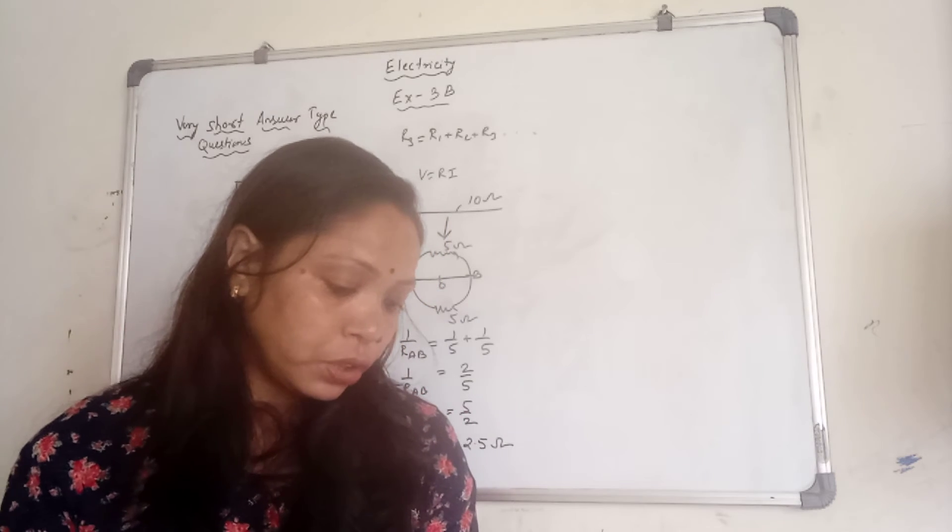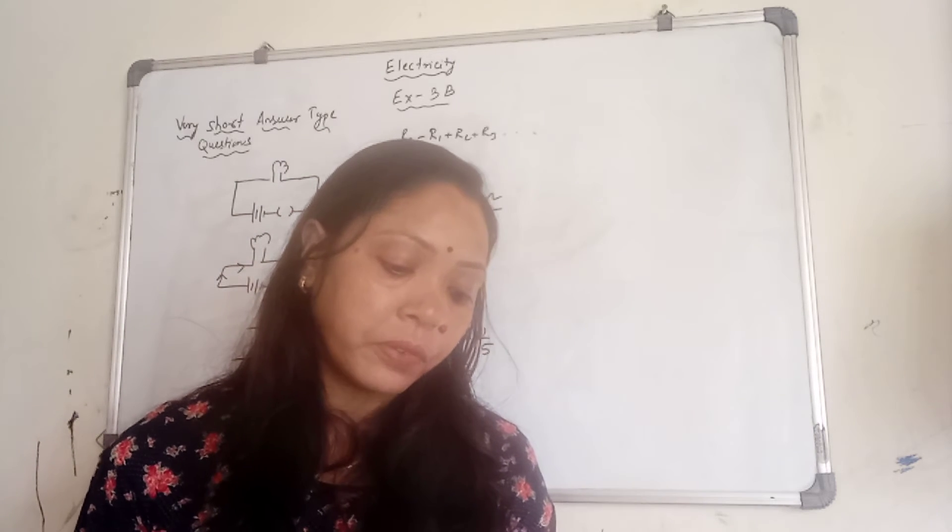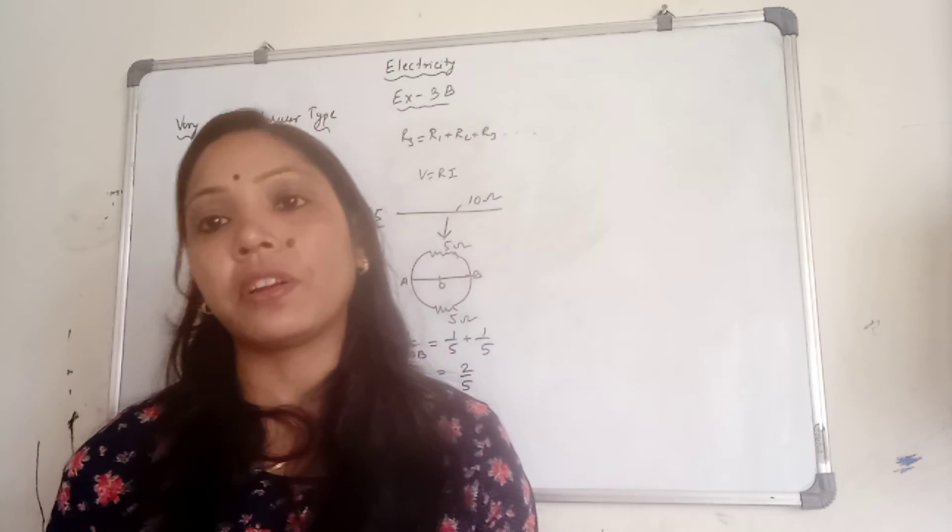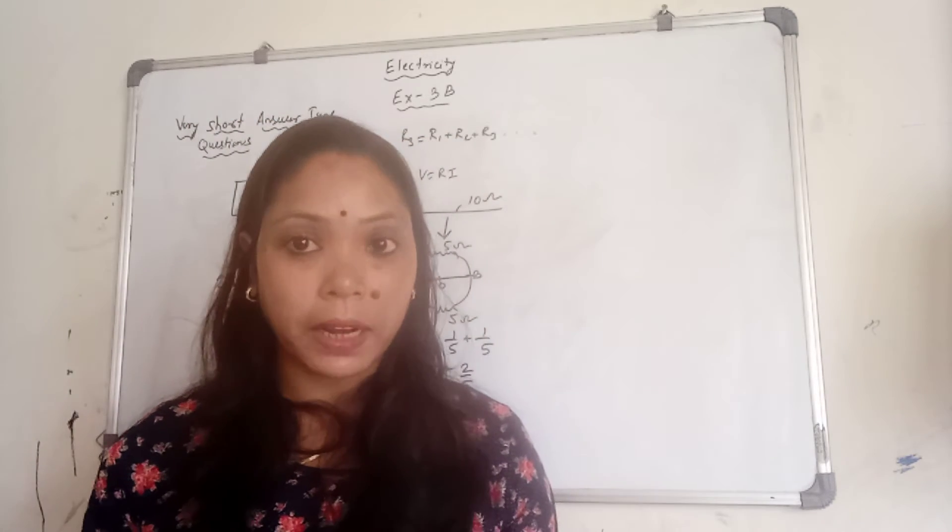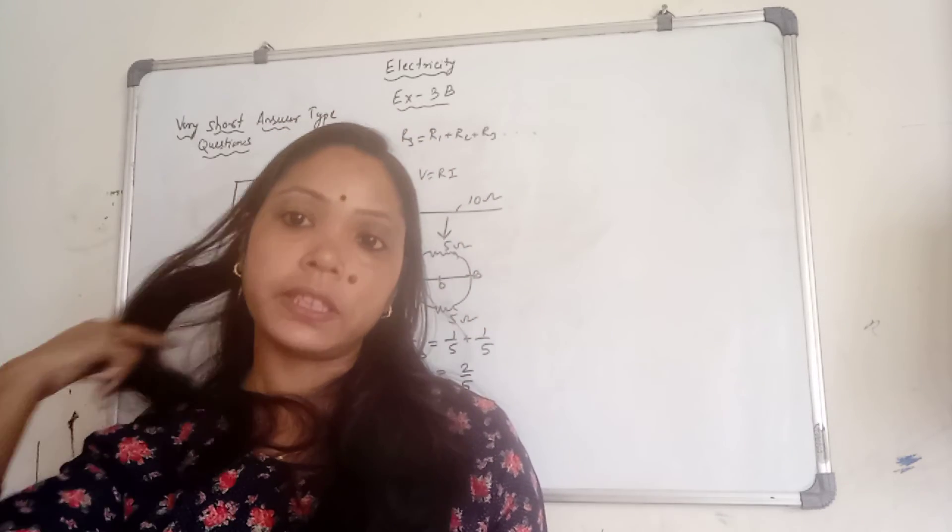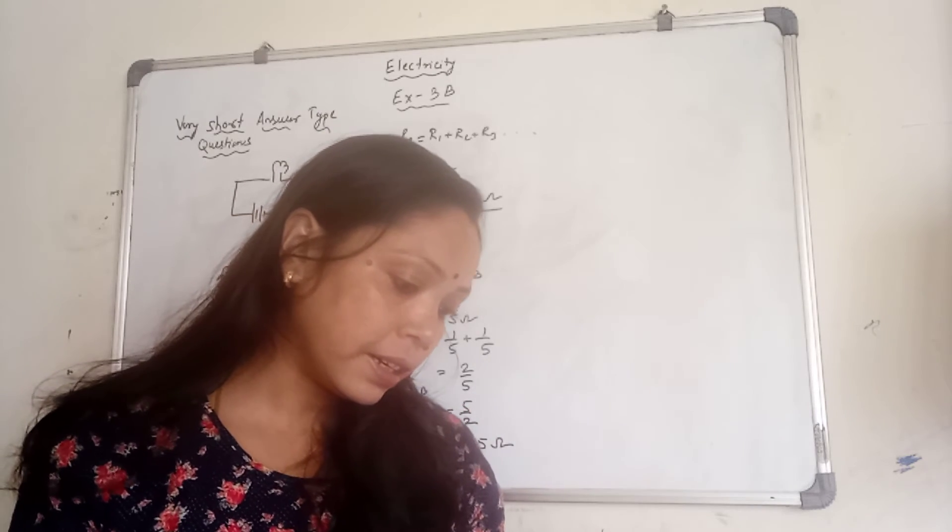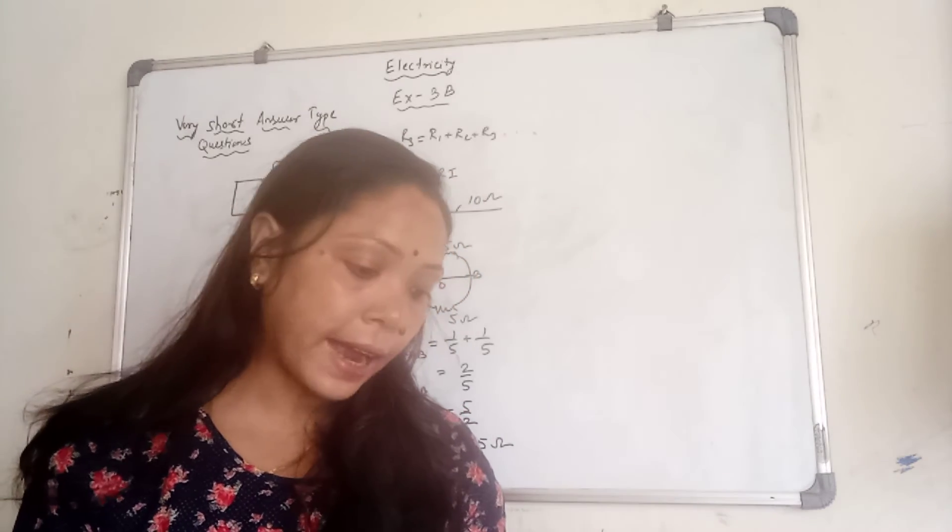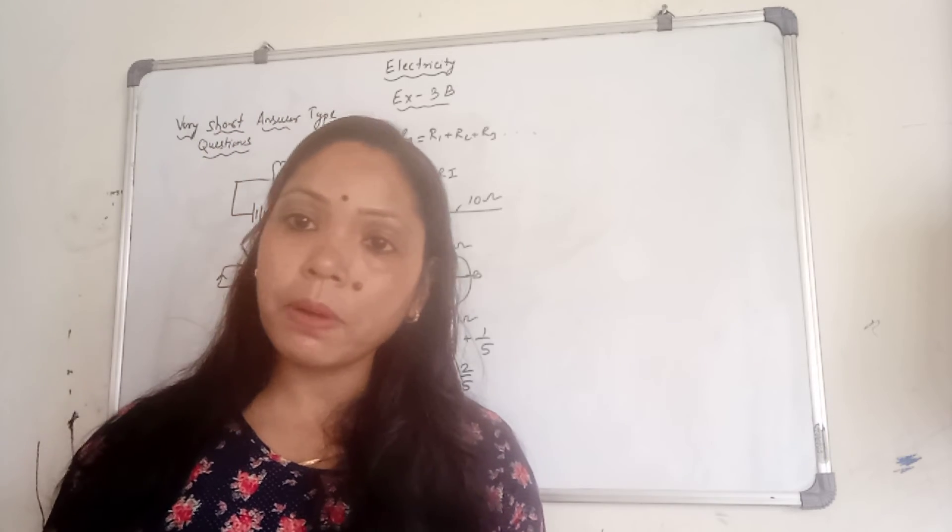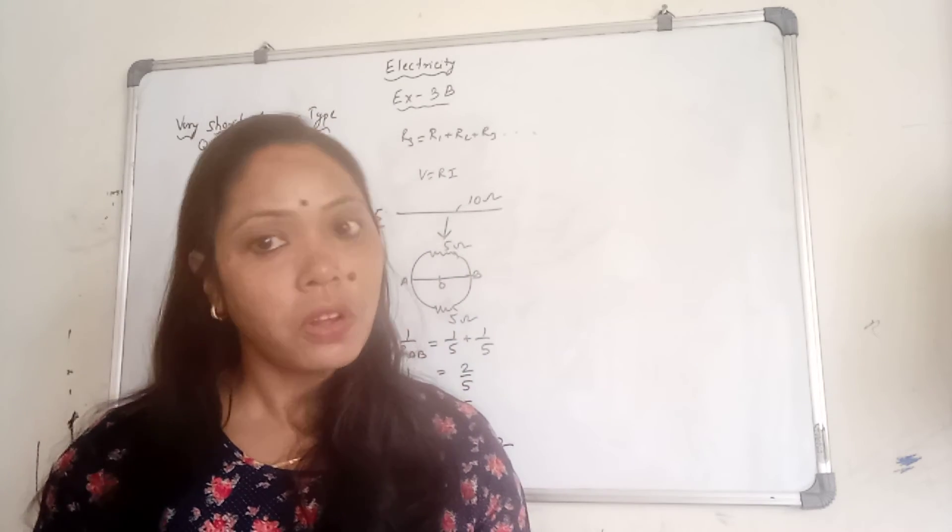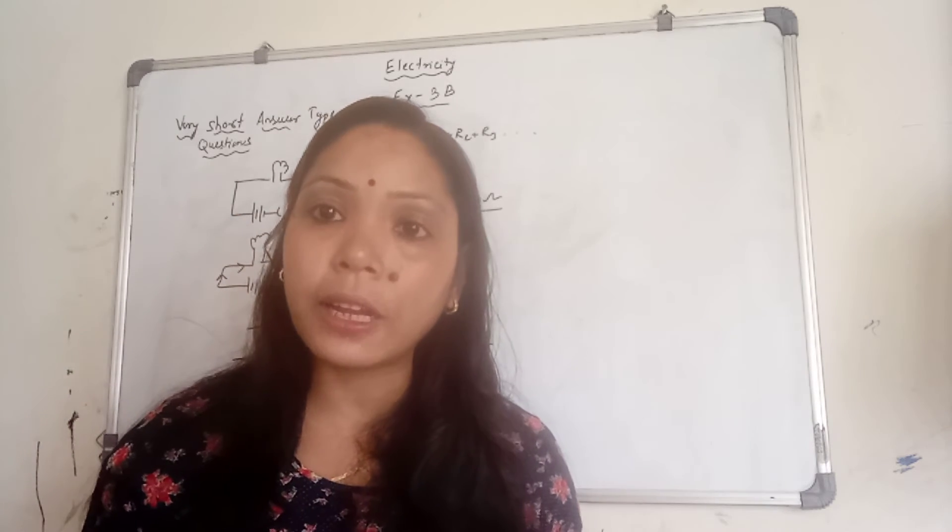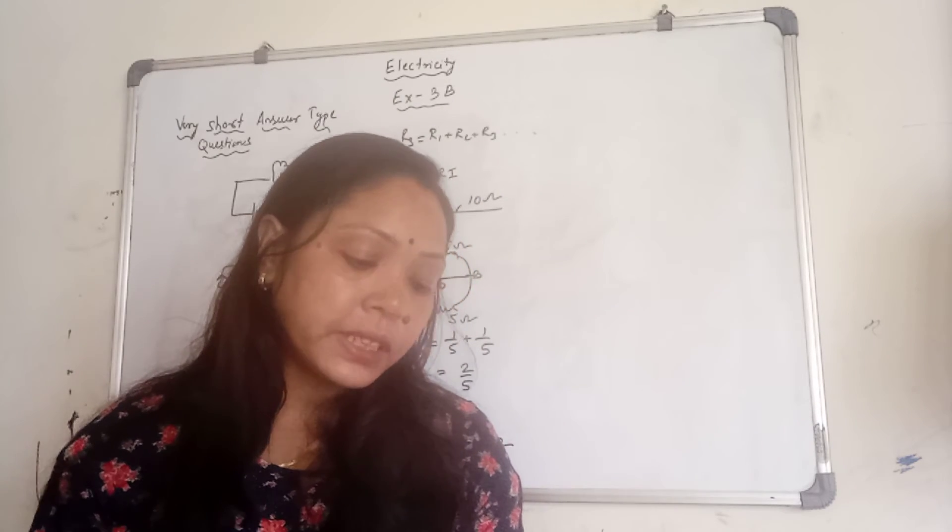Question number 6: should the heating element of an electric iron be made of iron, silver or nichrome wire? Again, this question is actually based on the heating effect of electric current. This one we are going to discuss in the next part. But you remember one thing, for heating element, we always need more resistance. If you see here, the three materials which are given as iron, silver and nichrome. Out of this, nichrome wire has a maximum resistance. If the maximum resistance, then the heating effect is also more. So, which one we can use to make the heating element? Yes, we can use the nichrome wire.